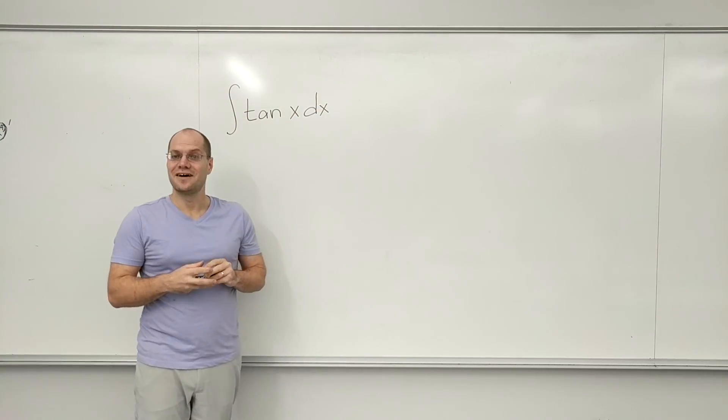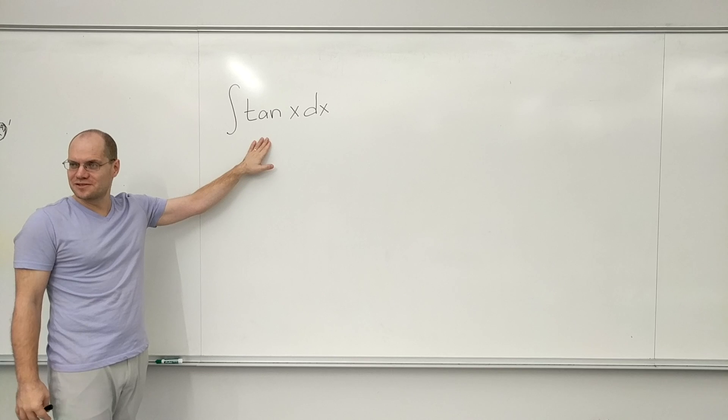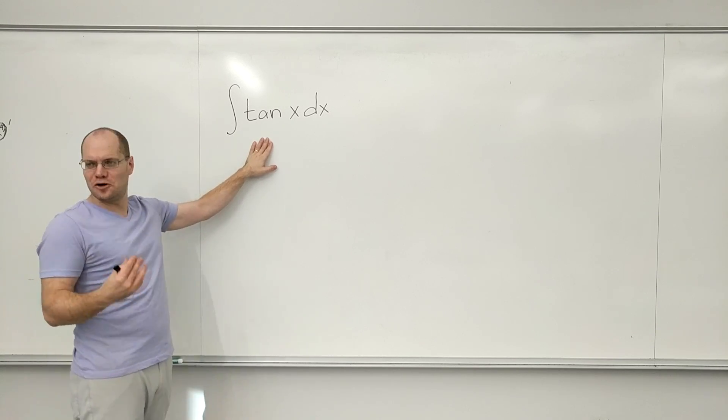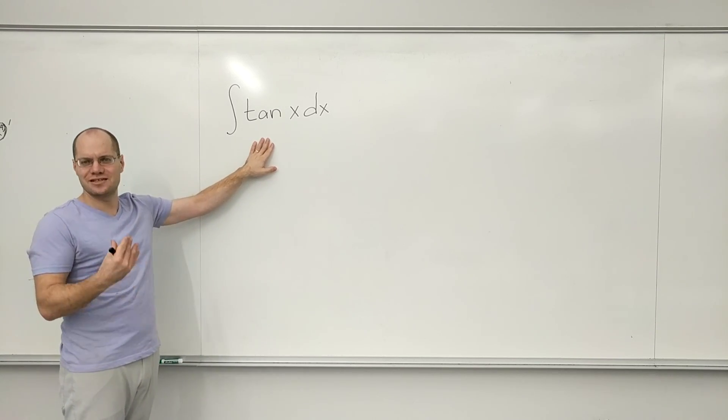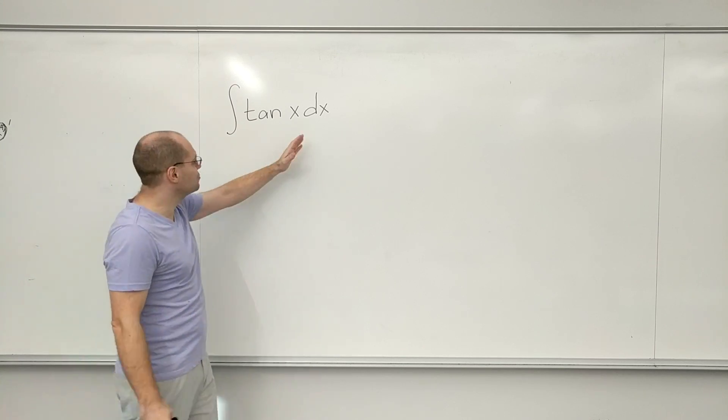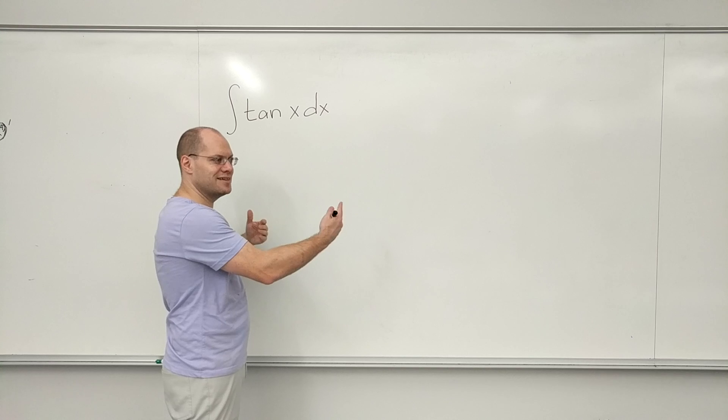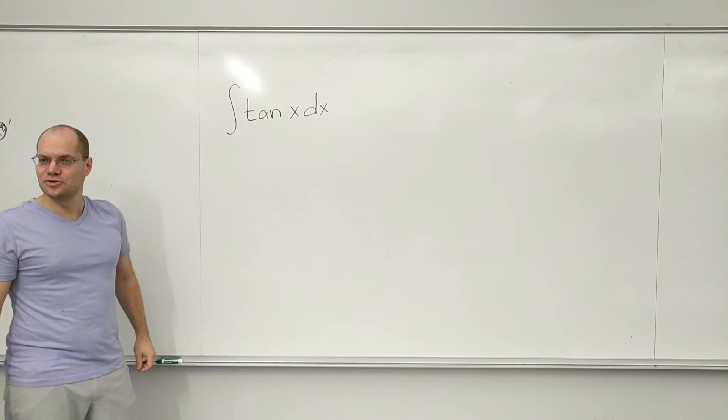Integral of tan of x. Okay, so when I look at this I'm a little bit befuddled because there's nothing to hold on to. There is no signature of any kind, there's no pattern. I don't recognize this as the result of applying the chain rule. There's just nothing to hold on to. So what do we do?